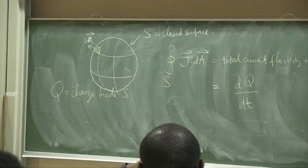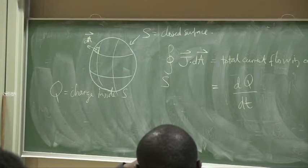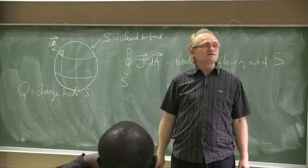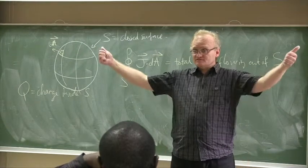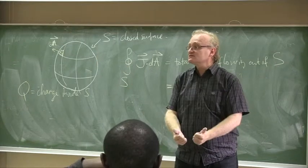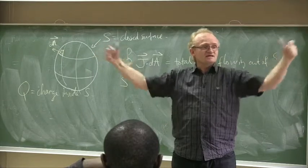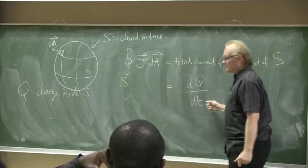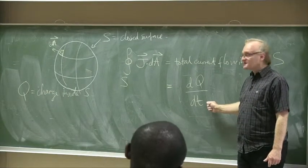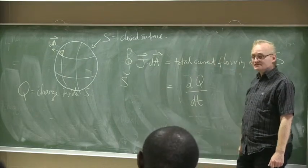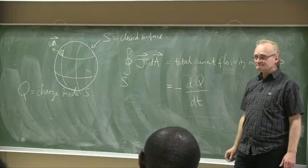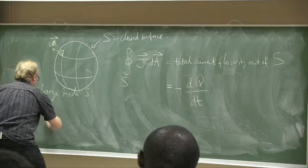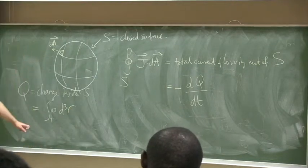If J dot dA is positive, the current flows out of the sphere. If the current flows out, the charge inside is decreasing, so dQ/dt is negative. So in fact the integral equals minus dQ/dt. We can also express Q as the volume integral of the charge density rho over the inside of S.